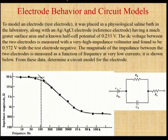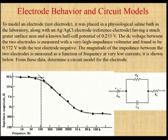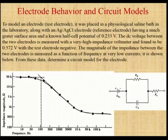Usually, we use a hydrogen electrode as a reference standard electrode with a voltage of 0 volts. This graph and circuit diagram represent the electrode behavior in circuit models. The electrode has a parallel combination of resistance and capacitance, which produces an equivalent form of inductance. The reference electrode Ag/AgCl — silver and silver chloride — produces a half cell potential of 0.233 volts. When DC voltage is applied between the two electrodes, it produces very high impedance, which is displayed on the voltmeter.